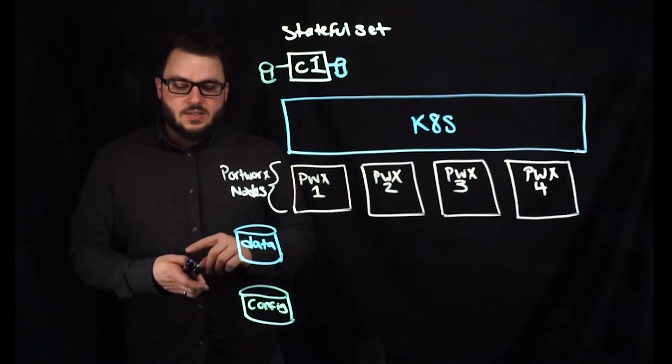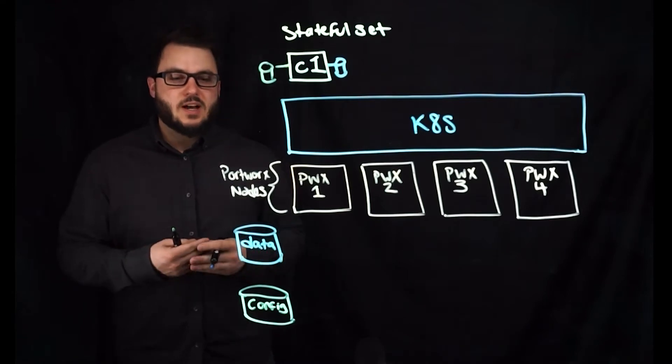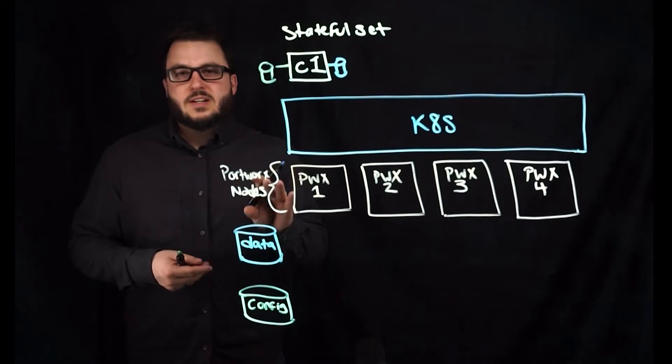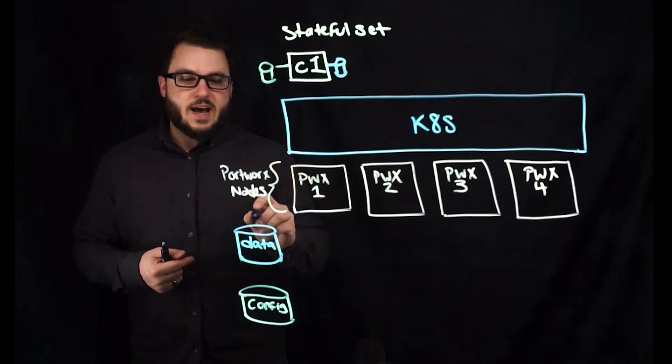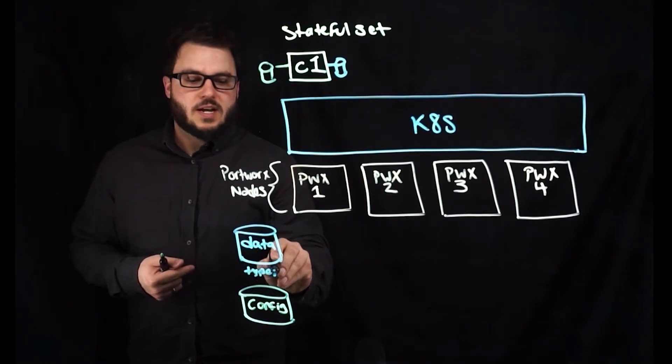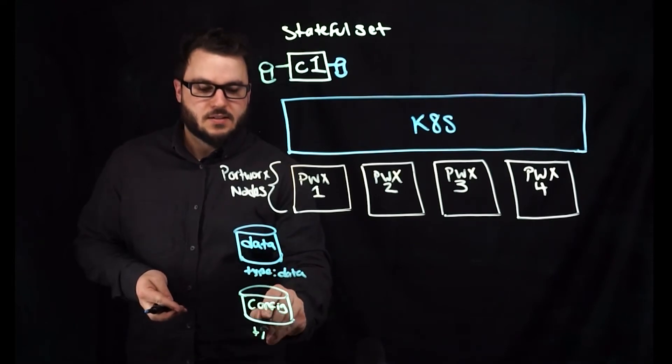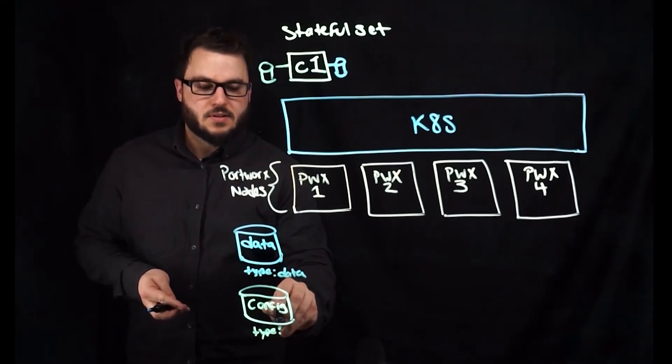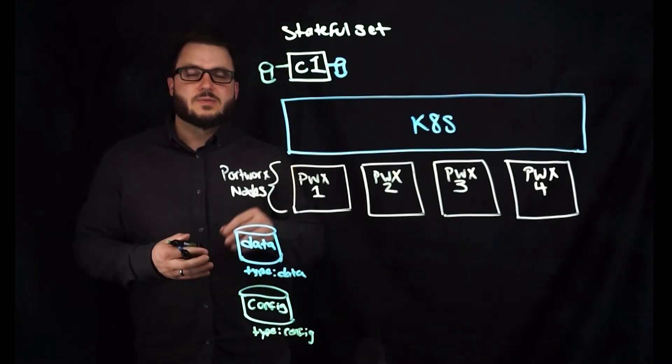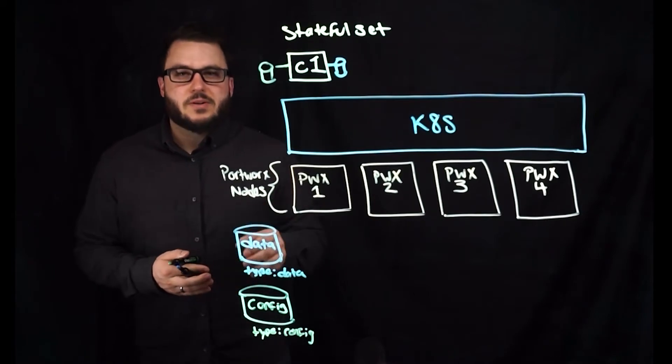So the way we can do this is by using Portworx volume placement strategies. But first we need to do two things. In our PVCs or our templates for the PVCs, we need to have a label of type equals data for our data volume and type equals config for our config volume. What this allows us to do is refer to those labels later on for our volume placement strategies.